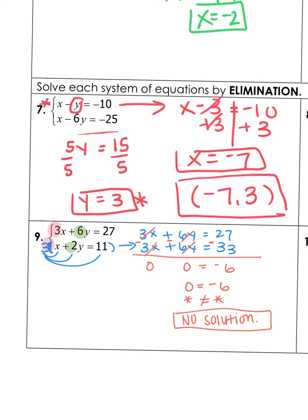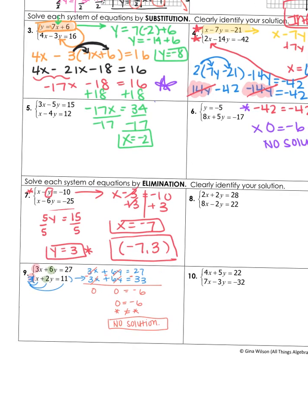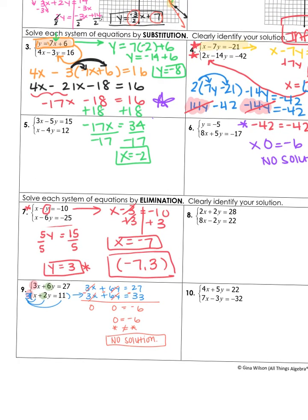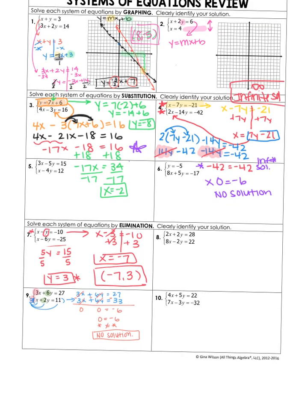Number 10 is going to be very similar to number 7. You may choose to eliminate your x or your y — it doesn't matter. Once you eliminate one, you'll solve for that one, then plug it into an equation to get the other one. Go ahead and try number 10 on your own. That concludes your video on systems of equations review — solving a system of equations using graphing, substitution, and elimination. If you have any questions, let us know.